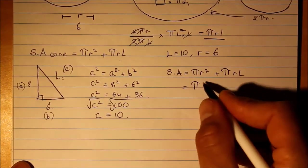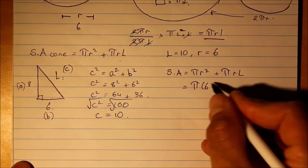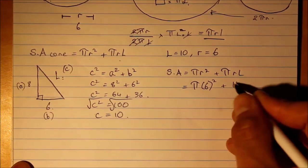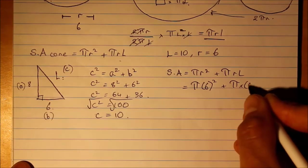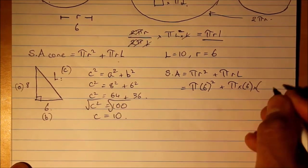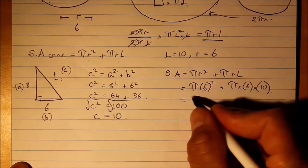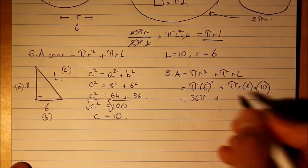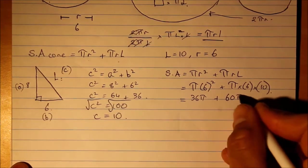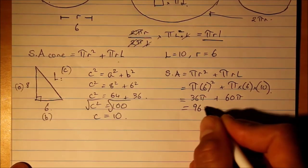Surface area equals π times 6² plus π times 6 times 10. 36π plus 60π equals 96π.